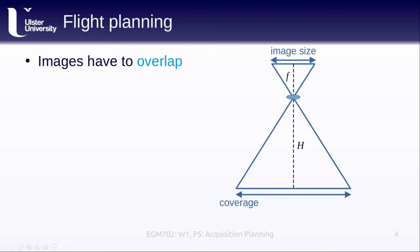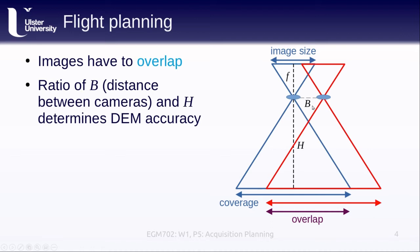If this is our image geometry, our real-world geometry, this is the coverage that this camera sees, and this is the image size that this camera sees. If we move it a little bit, we have some overlapping area shown here. We also have a distance between our two camera positions, which I've marked B here. The ratio of B to H, the ratio of the distance between the camera stations and the height of the camera stations above the ground, is actually going to determine how accurate the DEM that we get is.